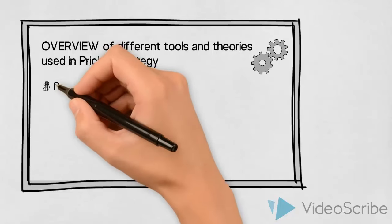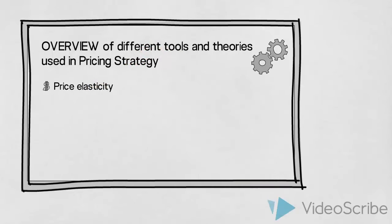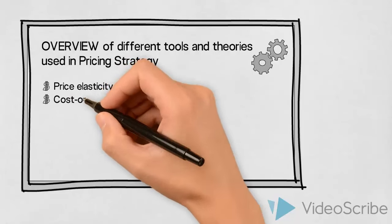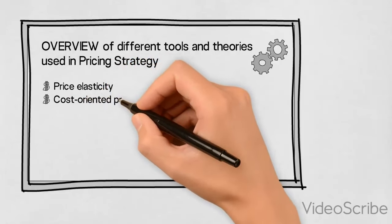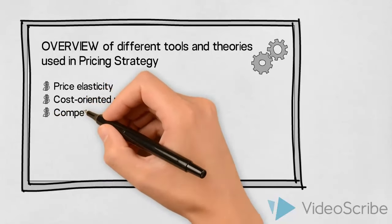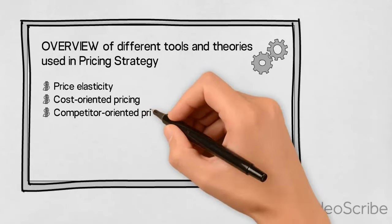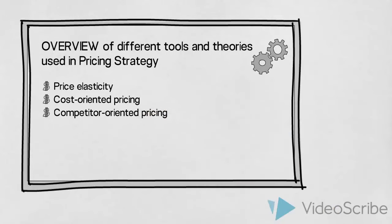Price elasticity can be looked at — to what extent, if at all, will a price change impact the demand for our product or service? Secondly, cost-oriented pricing can be used, where we base our price on the different costs involved in producing and selling our product. We can also use competitor-price-oriented pricing, where we base our price on the knowledge we have about our competitors' prices and activities.